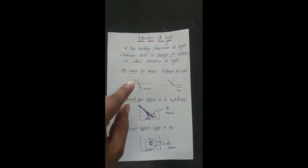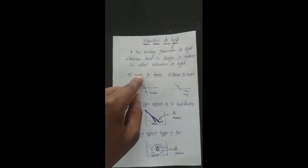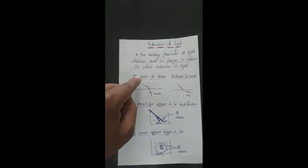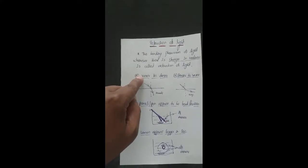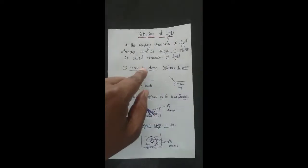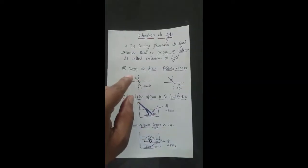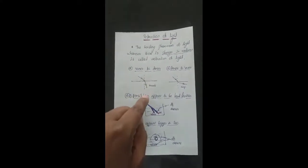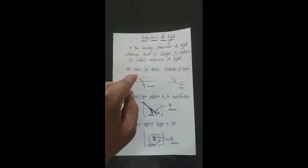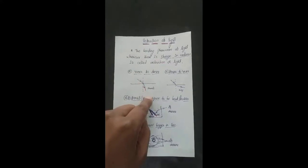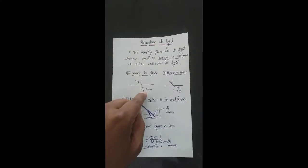There are two types of medium: rarer and denser. Rarer medium is where the speed of light is more, and denser medium is where the speed is less. When a light ray moves from rarer to denser medium, it does not go straight — it undergoes refraction and bends towards the normal.